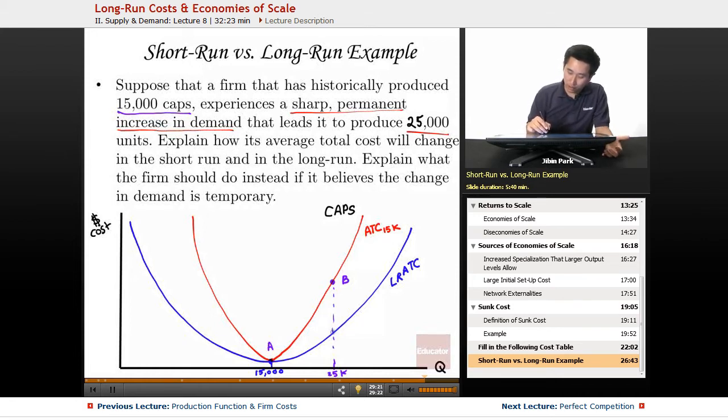Now, if it adjusts for the long run, what they're going to do is they're going to minimize that and they're going to go to point C. And now they're going to be on a completely different short-run average total cost curve because it has a different fixed cost.